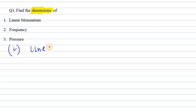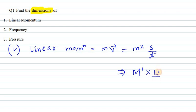written as M into V. Now V can be written as S (displacement) over time. Mass can be written as M¹, and displacement as L¹, then over T¹. So it can now be written as ML¹T⁻¹. This is for linear momentum.